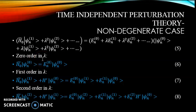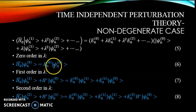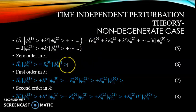First, for the zeroth order term in lambda — that is, the term free from lambda — we have H0 psi_n0 from the left-hand side, and this equals E_n0 psi_n0, which is the only term on the right-hand side free from lambda.